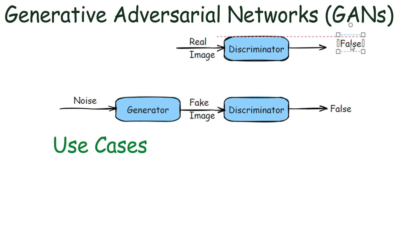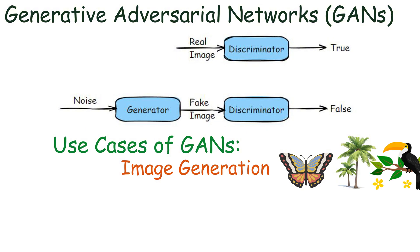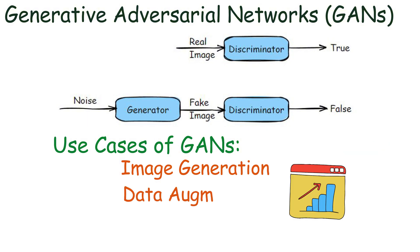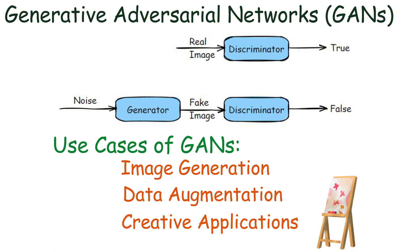The use cases of GANs are fascinating. Image generation: GANs are famous for generating realistic images, such as creating high resolution photos. Data augmentation: They can generate synthetic data to augment training datasets. Creative applications: GANs are used in artistic applications like generating artwork or music.